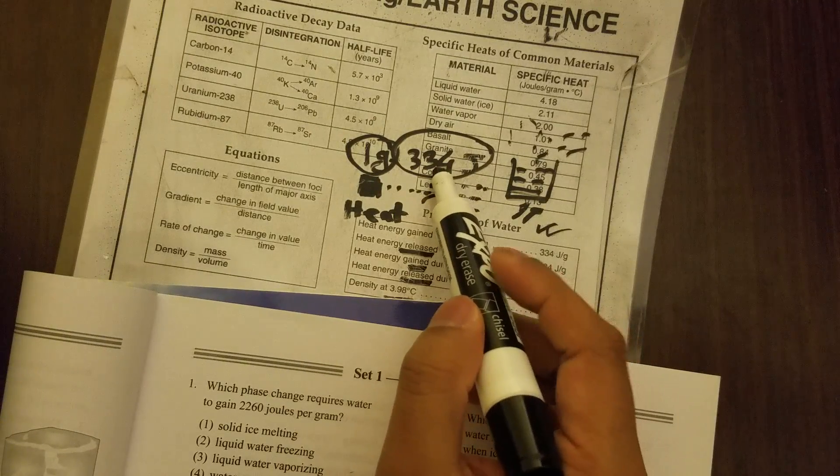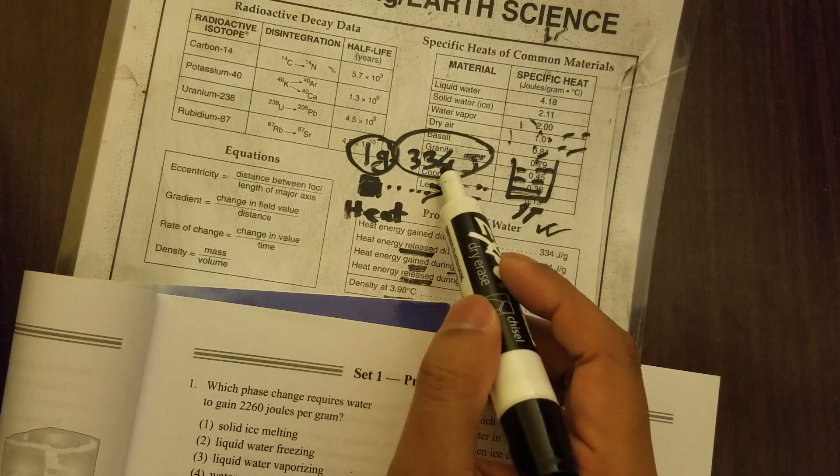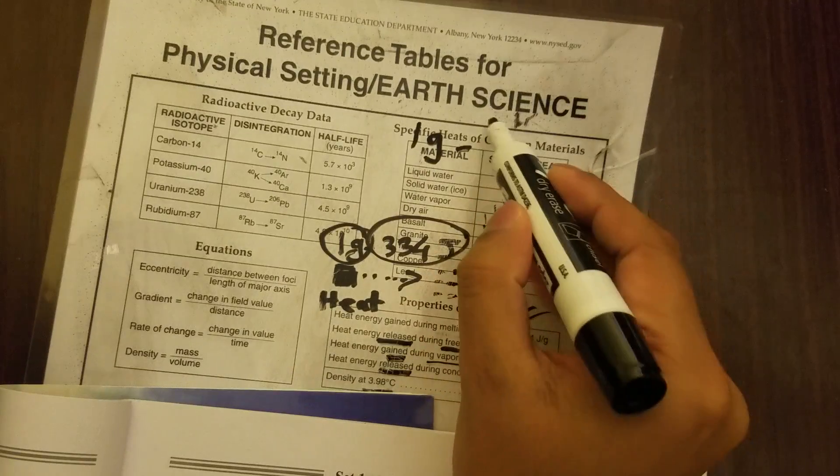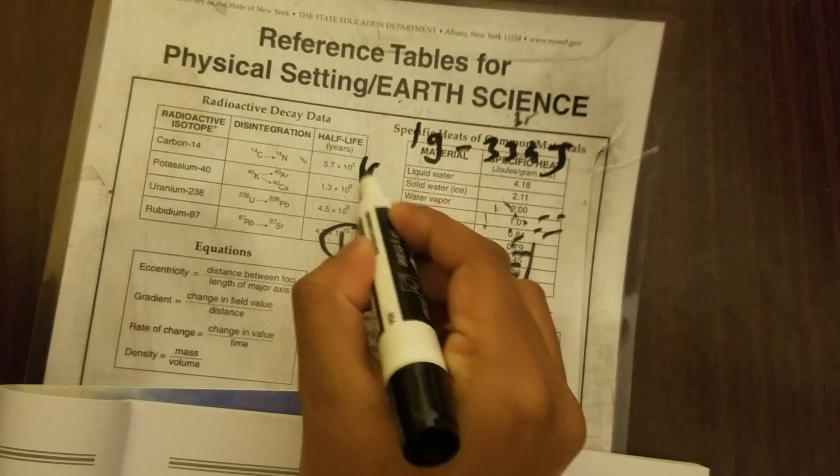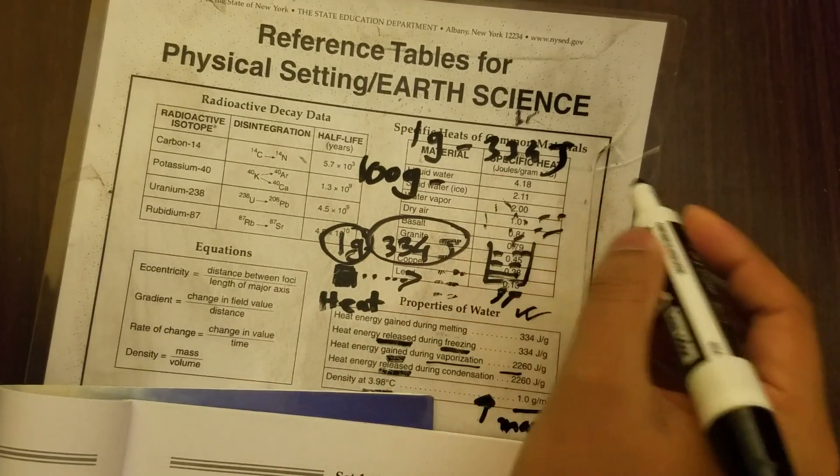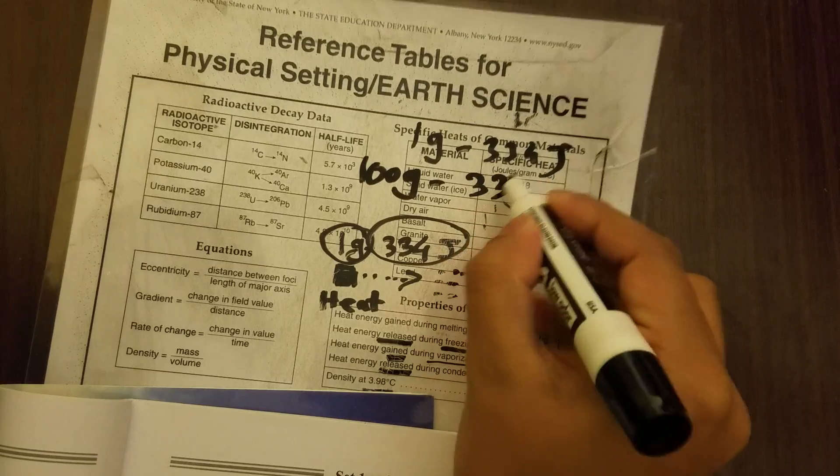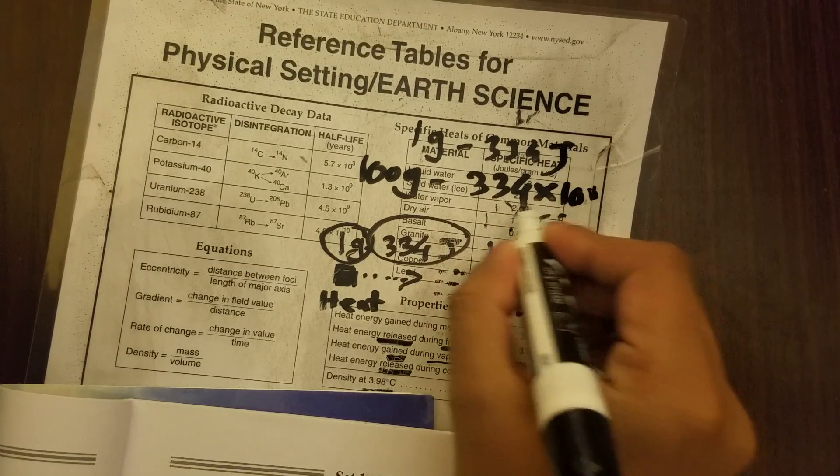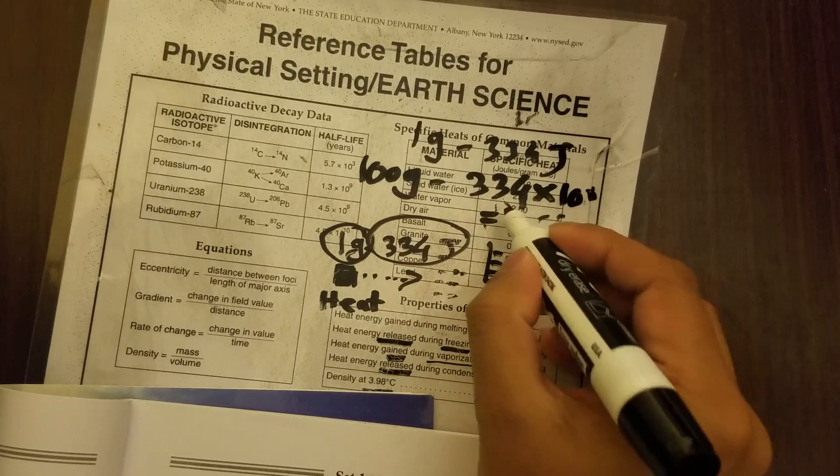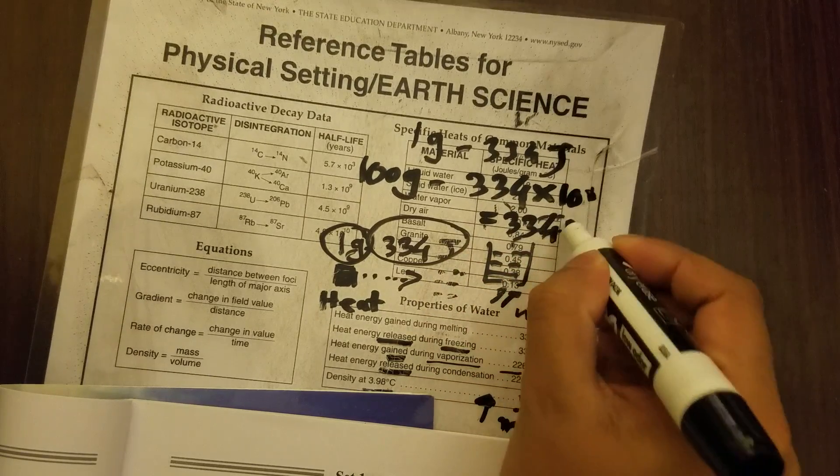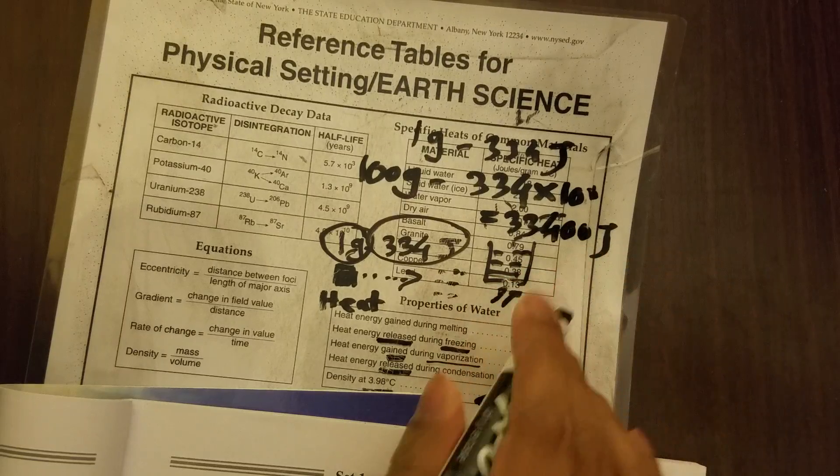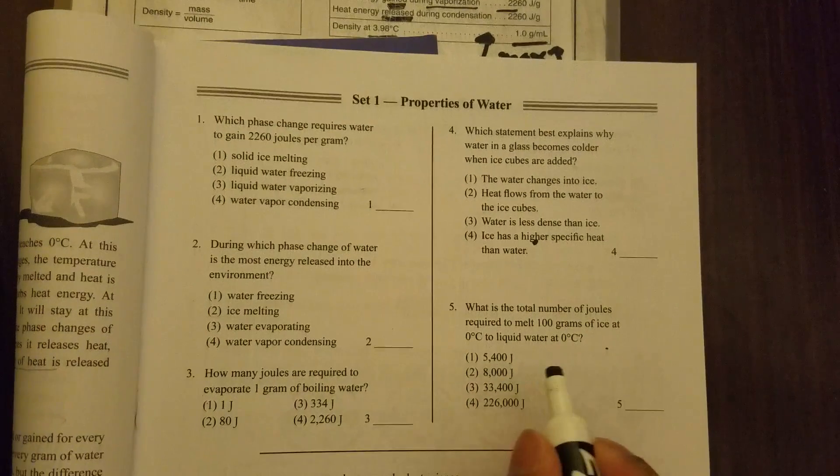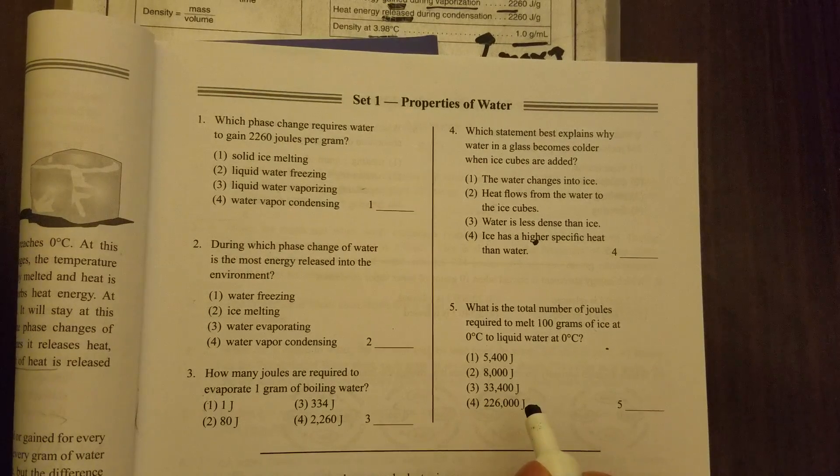So one gram you need 334 joules, so 100 grams you will be needing a lot more. If you know multiplication, you multiply 334 times 100, you get 33,400 joules. Now let's look at here, you can see choice 3 is the right answer.